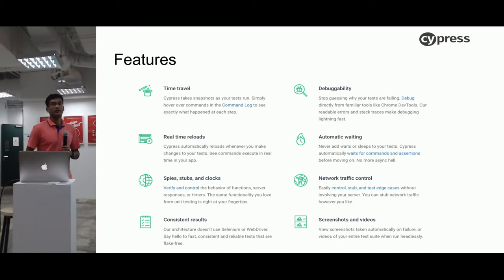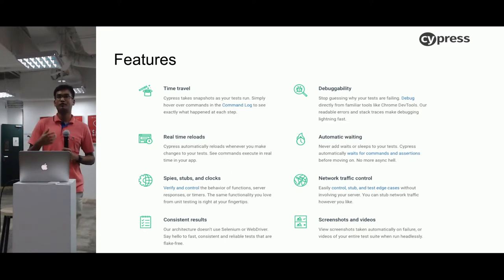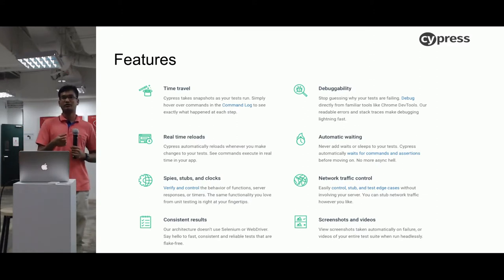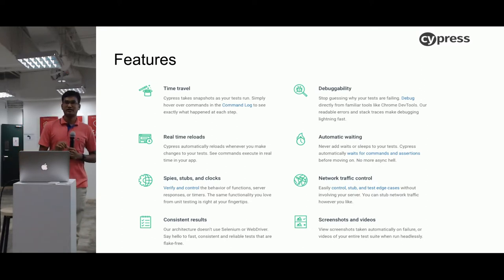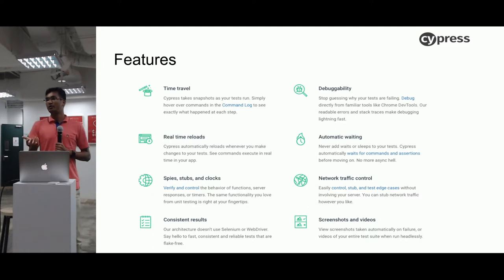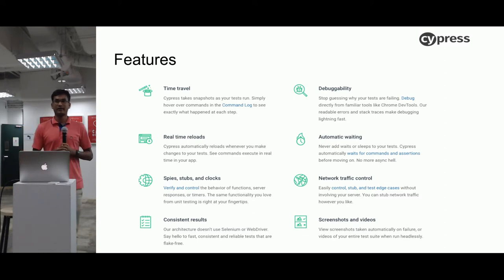Feature-wise, we have something called time travel. Time travel is the opportunity to look at the DOM state for each and every request, before and after the request is made. I'll show you in the test runner — we can really look at the DOM before and after the request is made from the browser. And debuggability — we can stop when the test is in progress and look at what's happening in the DOM. Whereas in WebDriver, we don't have access to Chrome DevTools or other underlying network layer resources. In Cypress, we have the ability to do it.